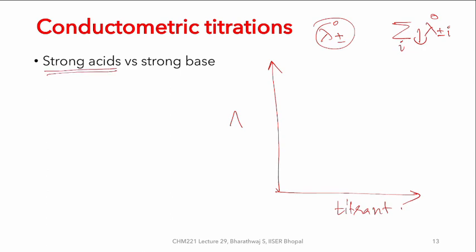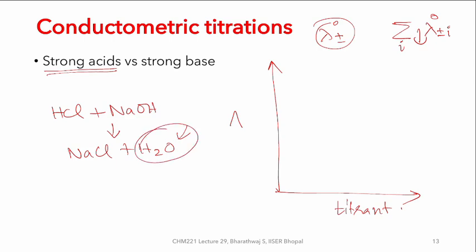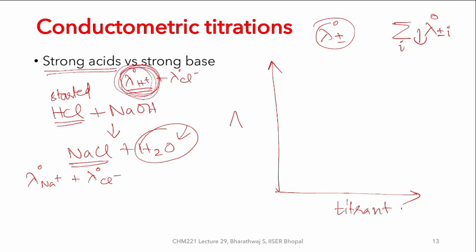As an example, if you have HCl in solution and add a strong base NaOH, you get NaCl + H₂O. The key point is that you initially have conductance due to H⁺ and Cl⁻, and you are replacing it with NaCl — meaning conductance from Na⁺ and Cl⁻. Since H⁺ has anomalously high conductance compared to any other ion, you are substituting it with a lesser-conducting ion. Therefore, as you keep adding the titrant NaOH, conductance keeps reducing.